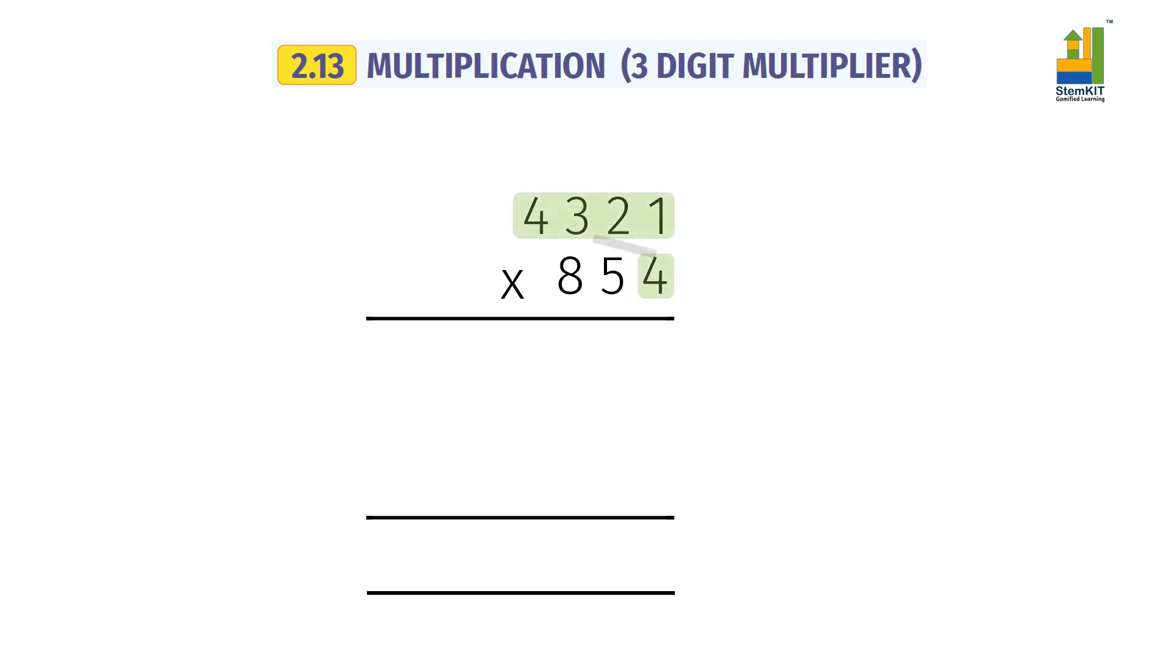Multiplying with units of multiplier: 4,321 into 4 equals 17,284.